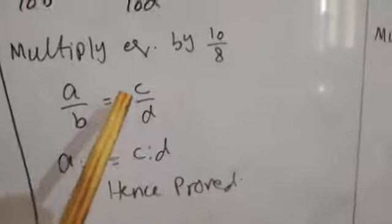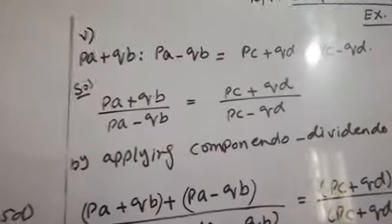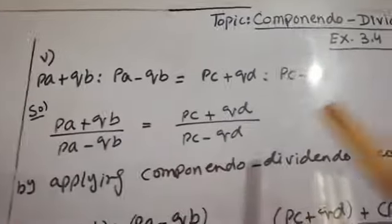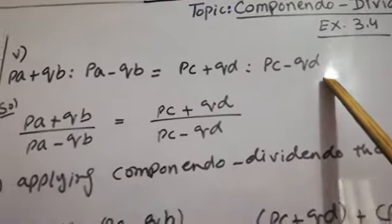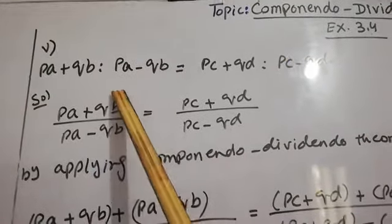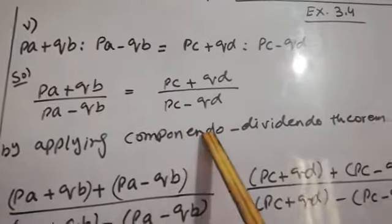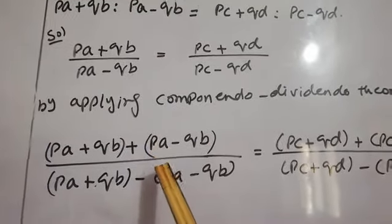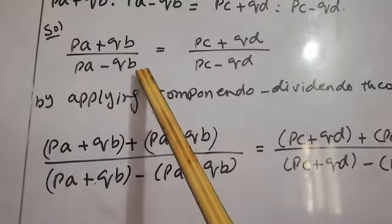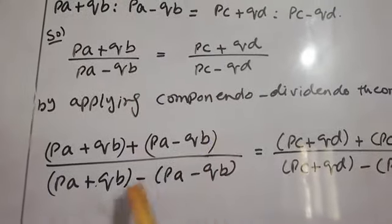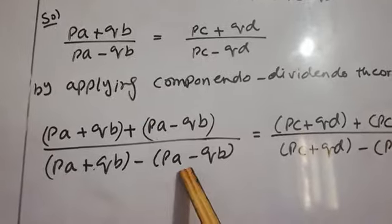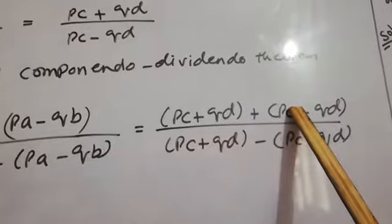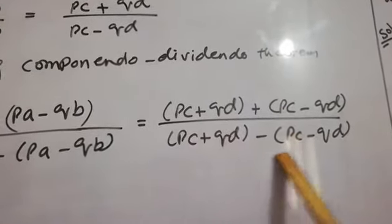Part number 5: PA plus QB ratio PA minus QB equals PC plus QD ratio PC minus QD. First we write this ratio in fraction form, then apply the Componendo Dividendo theorem. We add the value of the denominator to the numerator on one side, and take the difference between these two values on the other side. The same is done for the right-hand side fractions.